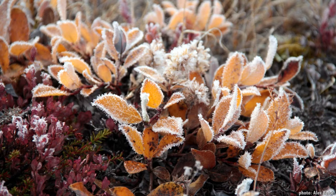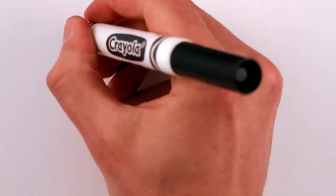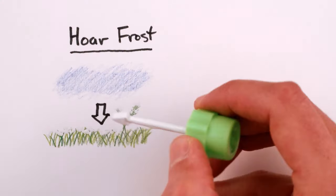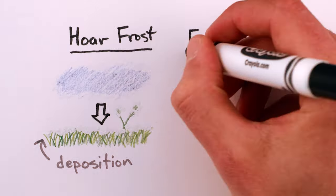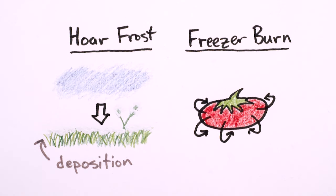Unlike regular frost, also called hoarfrost, which forms when water vapor that's already in the air freezes into crystals on top of something cold, the frost in freezer burn comes from frozen water in the food itself.